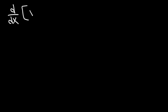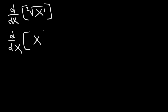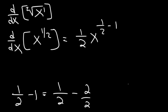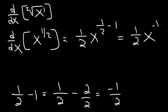Now what about the derivative of the square root of x? We need to rewrite it. This is x raised to the 1st power within a square root symbol, and the index number is 2. So we rewrite it as x to the 1 half. Now we can use the power rule: it's 1 half times x raised to the 1 half minus 1. One half minus 1 is the same as 1 over 2 minus 2 over 2, which becomes negative 1 half. So we get 1 half x raised to the minus 1 half.